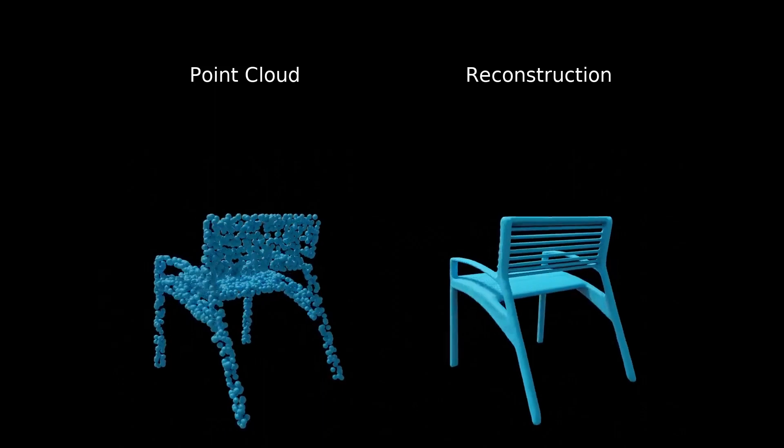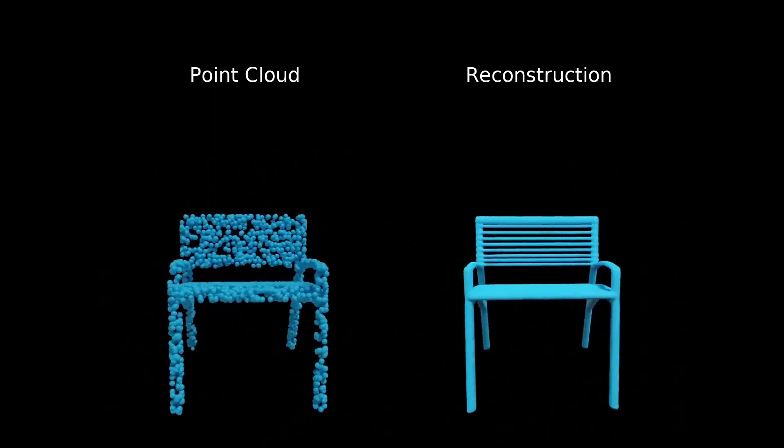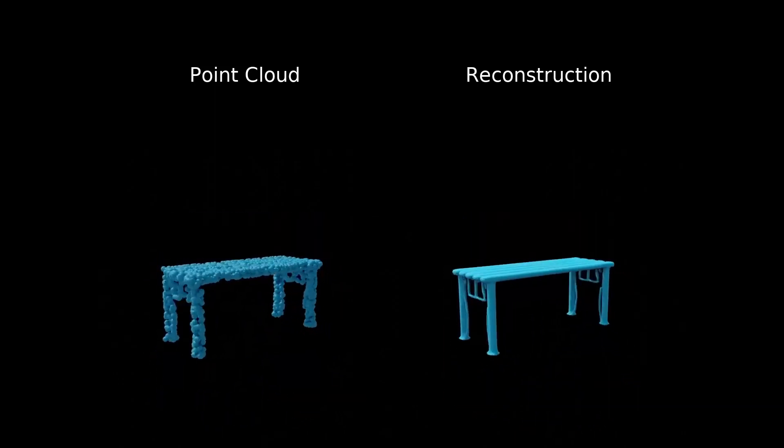Next, we are going to show some shape autoencoding results. Given a point cloud, the model is able to reconstruct shapes with detailed structures.